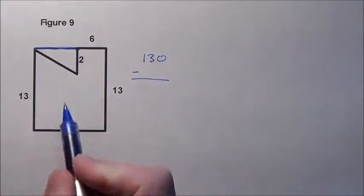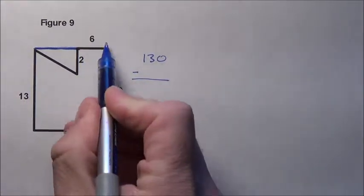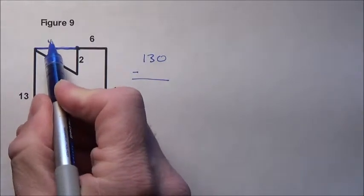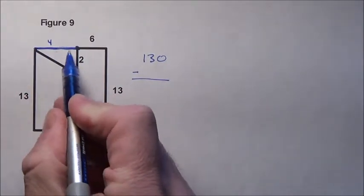Well, what's the distance across here? Well, if the bottom is 10 and here to here is 6, that means from here to here must be 4 with this right triangle.